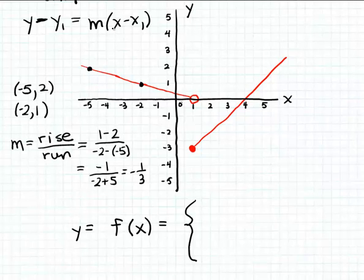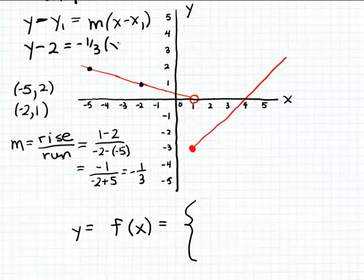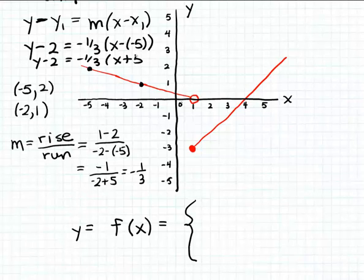Now we can use that in the point-slope formula to write down the formula for this line, using either pair of coordinates as the given point (x₁, y₁). Let's use the first point (−5, 2). So we have y minus 2 equals the slope −1/3 times x minus (−5). Simplifying slightly, that's y − 2 = −1/3 · (x + 5). That is the formula for the left-hand piece of the piecewise graph.